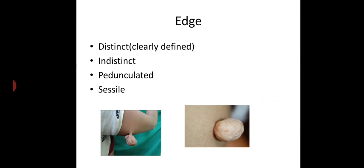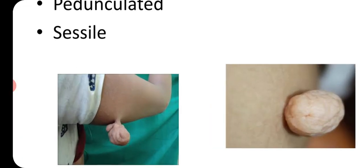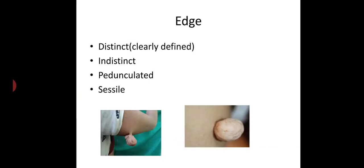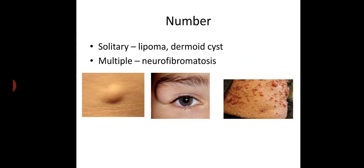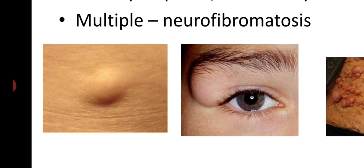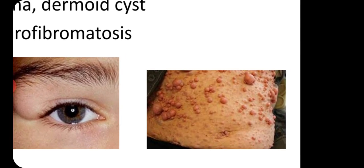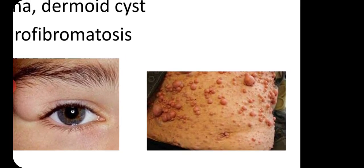Surface — for example, cauliflower-like as in squamous cell carcinoma, or irregular branched surface as in papilloma. Edge — whether distinct or indistinct; distinct means clearly defined. The swelling may also be pedunculated or sessile. Number — solitary as in lipoma or dermoid cysts, or multiple swellings as in neurofibromatosis.